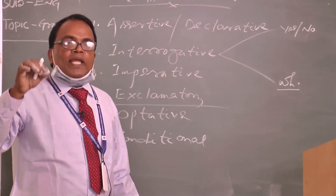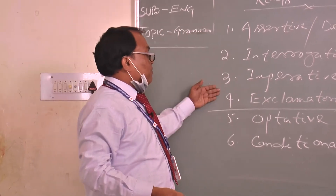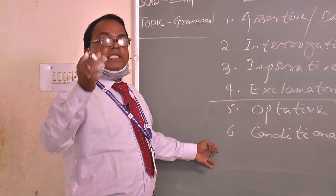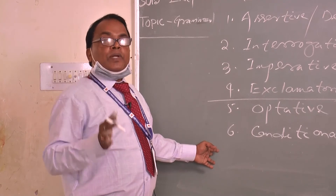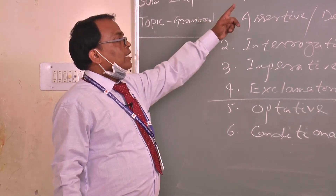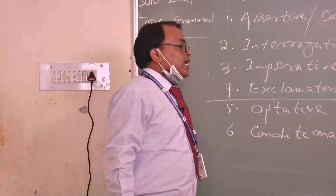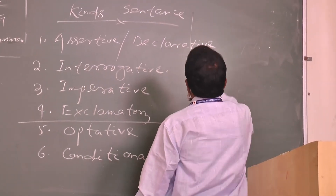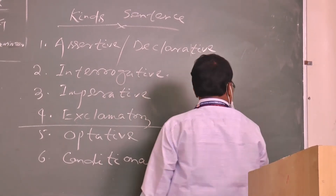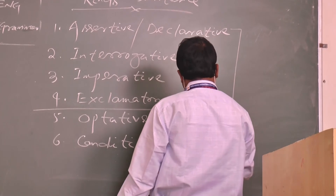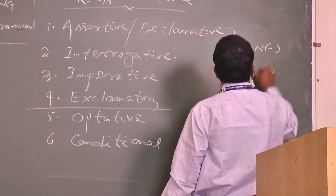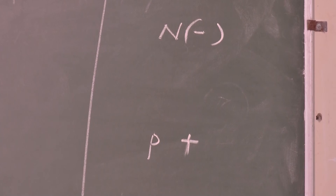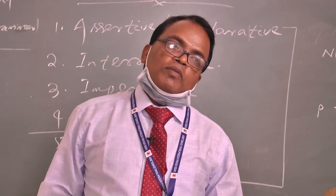So, we explain our feelings through these sentence types. Including the other two types, there are six in all. We use sentences to present our emotions, communications, and language. We have to read sentences of various kinds. And all sentences are divided into two parts — positive and negative. Thank you all. Have a nice day. We will meet again.